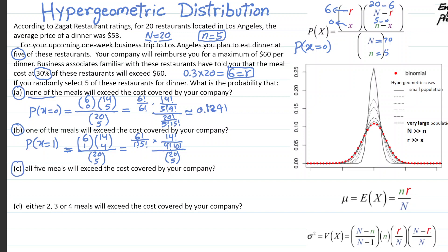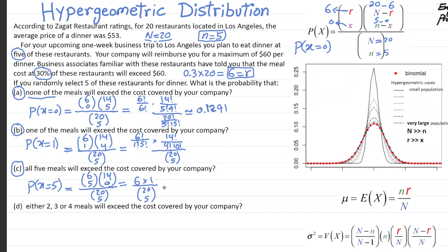Now part C: all five meals will exceed the cost covered by your company. So P(X = 5) — out of the six expensive restaurants you select five, and out of the inexpensive ones you select none, so 14 choose 0. The denominator is again 20 choose 5. Here, 6 choose 5 is simply 6 and 14 choose 0 is simply 1. I'll leave computing the final number for you to calculate.